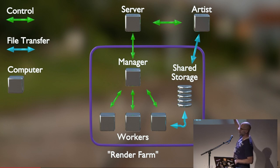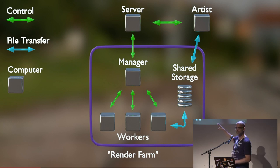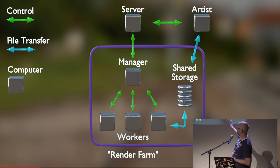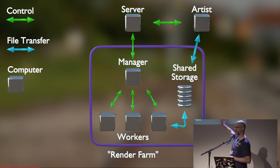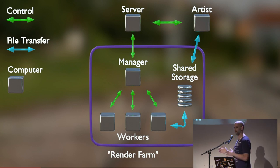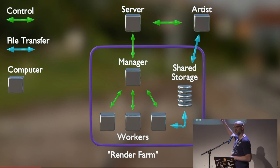I have a bunch of cubes here that represent computers. The green arrows represent the command and control messaging, and the blue arrows represent the files being transferred back and forth. The render farm consists of workers that are actually running Blender and doing all the rendering. They're being controlled by a manager — that's the stuff you would install in your network. The workers access some shared storage that contains all the assets, the blend files, everything. Then you have the server, which is part of Blender Cloud.